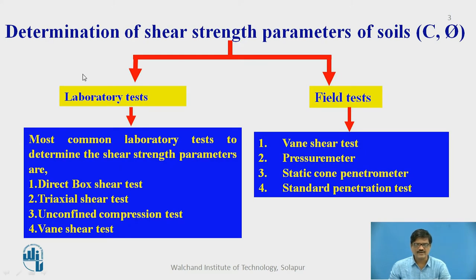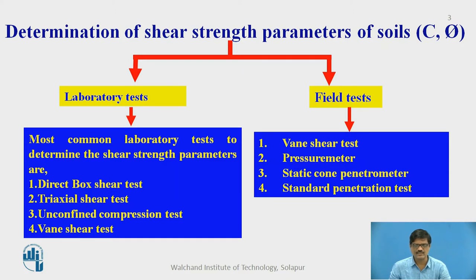As we are aware, there exist two approaches of finding the strength parameters of the soil, C and phi. The first approach is laboratory test and another one is field test. In the laboratory test, we have a direct box shear test, triaxial shear test, unconfined compression test and vane shear test. Whereas in the field, we can perform a vane shear test, pressure meter test, static cone penetrometer test and standard penetration test. Out of these tests, today we will discuss about the unconfined compression test.